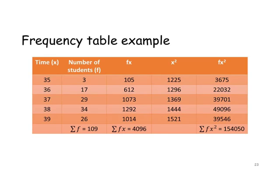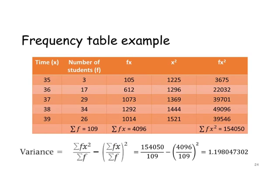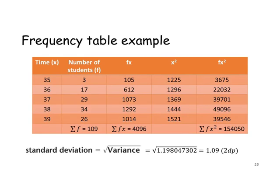Let's add some columns to our table. We have the original data, and we've added a column for f times x, a column for x-squared, and a column for f times x-squared. The bottom row is a totals row, giving us the total of the frequencies, the total of f times x, and the total of f times x-squared. We substitute our numbers into our formula to get a decimal value, then take the square root for the standard deviation, which to two decimal places is 1.09.